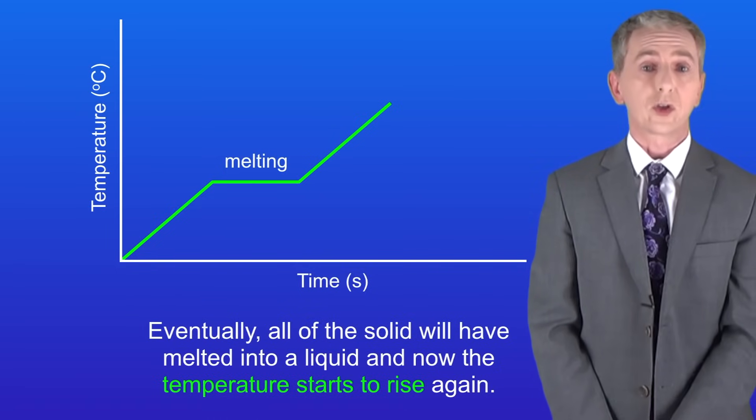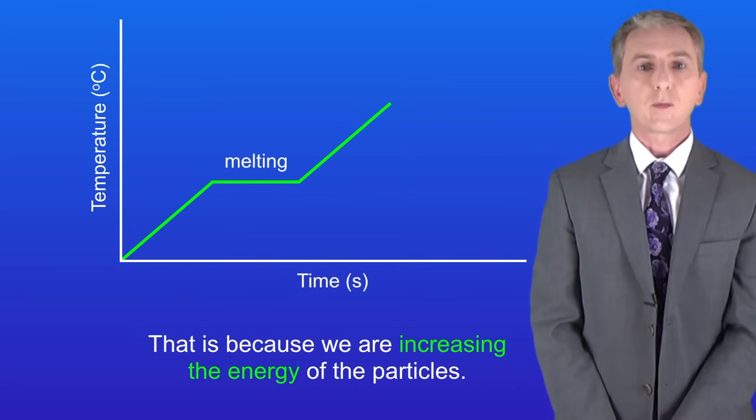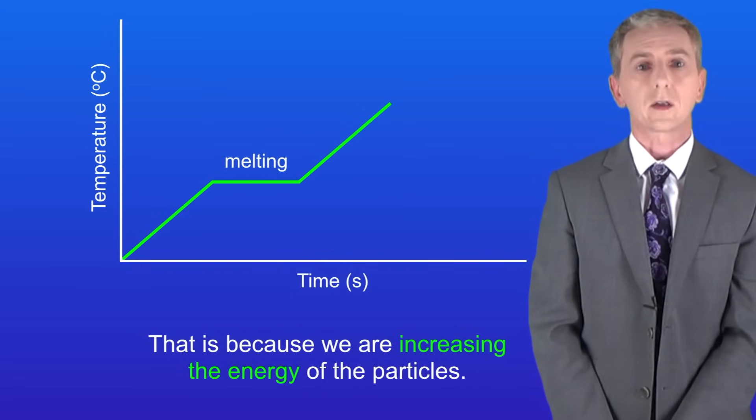Eventually all of the solid will have melted into a liquid and now the temperature starts to rise again. Again that's because we're increasing the energy of the particles. At some point the temperature stops increasing and the line becomes horizontal again like this.